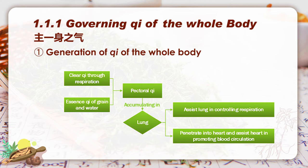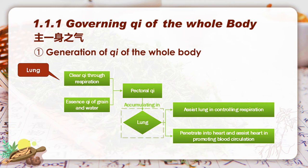I have a question. Although we have already known that lung governs the qi of the whole body because of the formation and accumulation of pectoral qi in the lung — which organs do you think are the most important organs that take part in the production of qi of the whole body? Lung? Any other organs? Where does the essence qi come from? Yes, spleen. So, the most important organs for the production of qi of the whole body are lung and spleen.